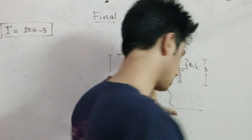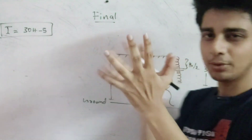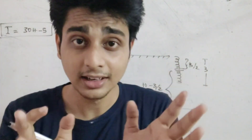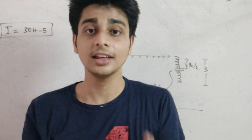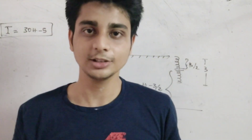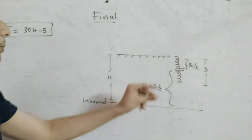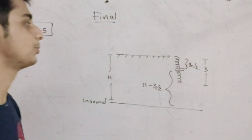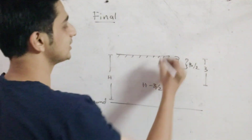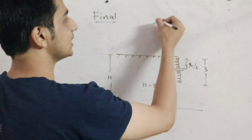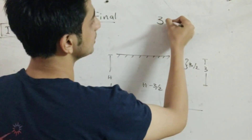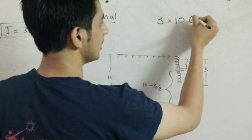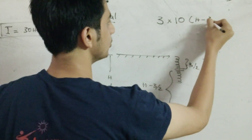How is the potential energy? If there is a position, there is potential energy and kinetic energy. The potential energy is mgh. The total mass is 3, g is 10, h is h minus 3/2. So the final potential energy is 3 × 10 × (h − 3/2) = 30h − 45.